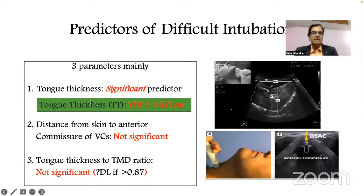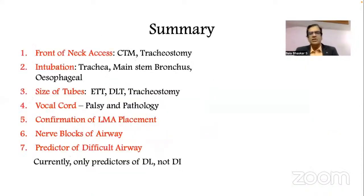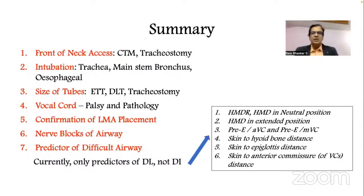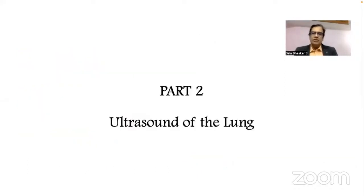For predicting difficult intubation specifically, three parameters are discussed: tongue thickness more than 6 cm, distance from skin to anterior commissure, and tongue-thickness-to-thyrohyoid-distance ratio — though these are not yet confirmatory predictors. In summary for airway ultrasound: front-of-neck access and cricothyroid membrane identification, tracheostomy guidance, confirmation of tracheal intubation versus esophageal or left main bronchus intubation, tube sizing, vocal cord appearance and movement, LMA confirmation, nerve blocks, and difficulty prediction — where only difficult laryngoscopy predictors currently have sufficient value.